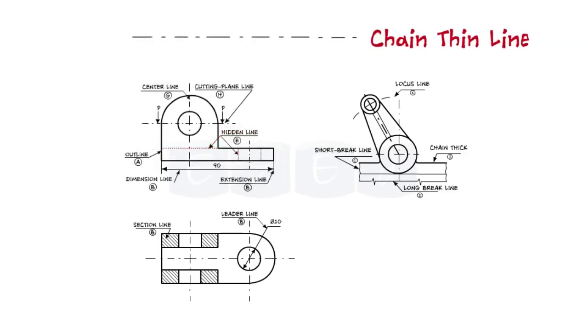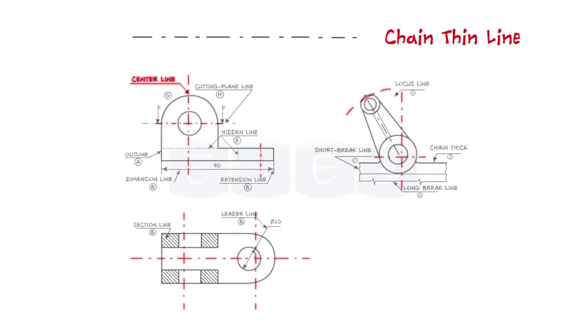Next is the chain thin line, long dash dotted. This line is used to represent the center line for circles and arcs.